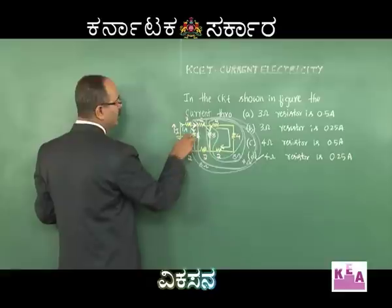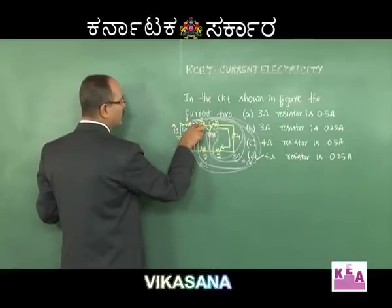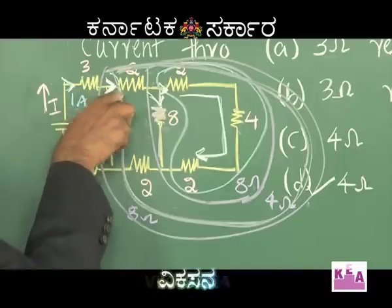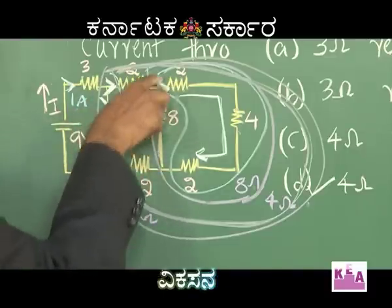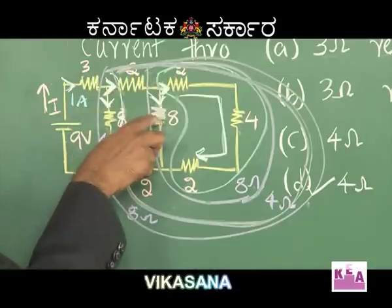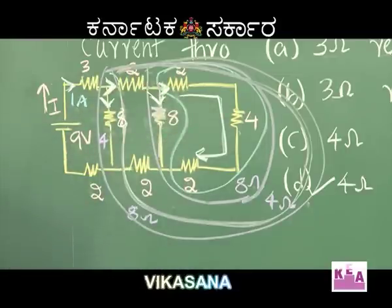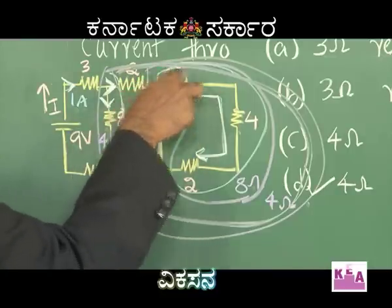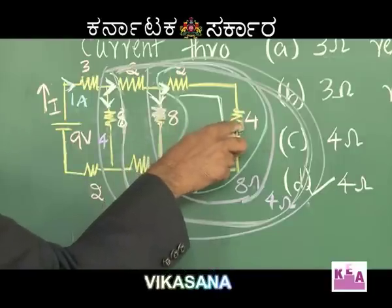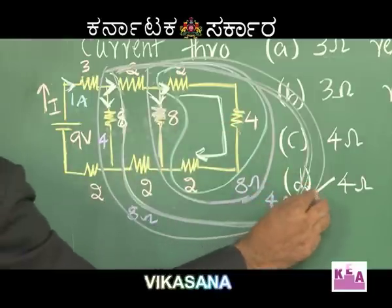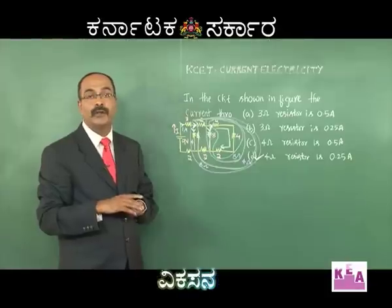This 8 and this combination is giving 8 — so 0.5 splits into two because equal resistance means equal current. Therefore the same current flows through 2 ohm, 4 ohm, and 2 ohm. The current through the 4 ohm is clearly 0.25 amperes. Therefore option D is correct.